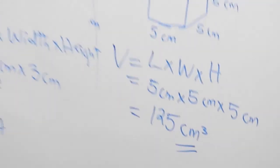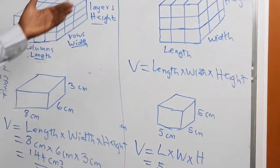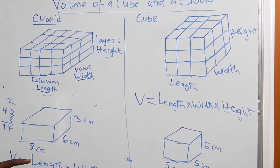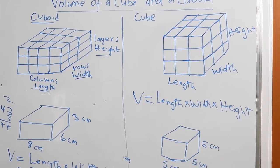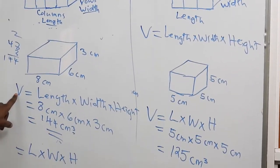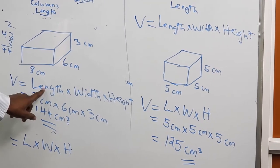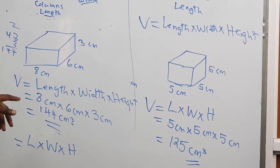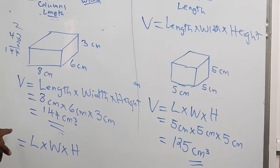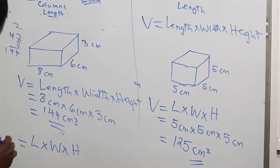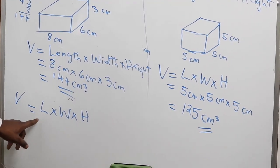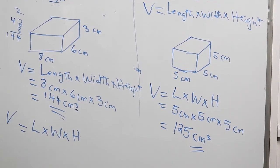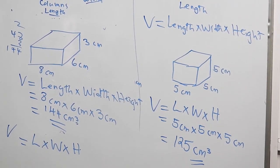So we can summarize by saying that the volume of a cube and a cuboid are both given by volume equals length times width times height, which we can write in short form as V = L × W × H. That is the volume formula for both a cube and a cuboid. Thank you very much.